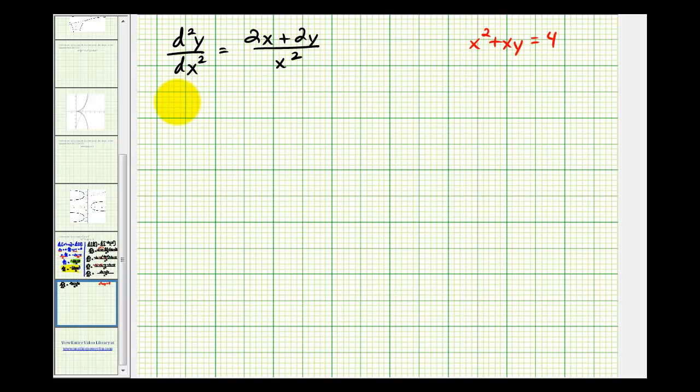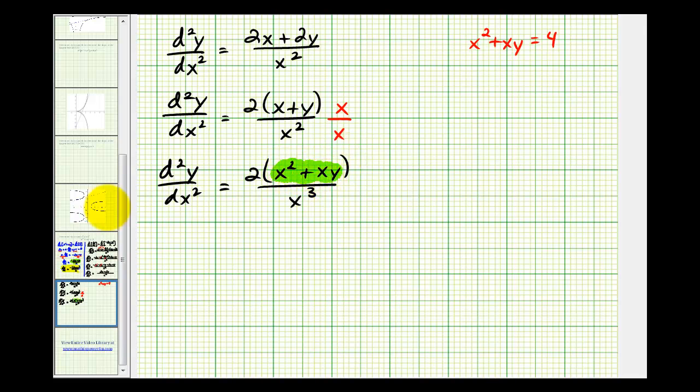Let's go ahead and factor the numerator, factor out the 2. So again, this is our second derivative, but what you'll notice is if we multiply both the numerator and denominator by x, you would have the second derivative equal to 2 times the quantity x squared plus xy all over x cubed, and the reason why you might see this done is notice that x squared plus xy is part of the original equation.